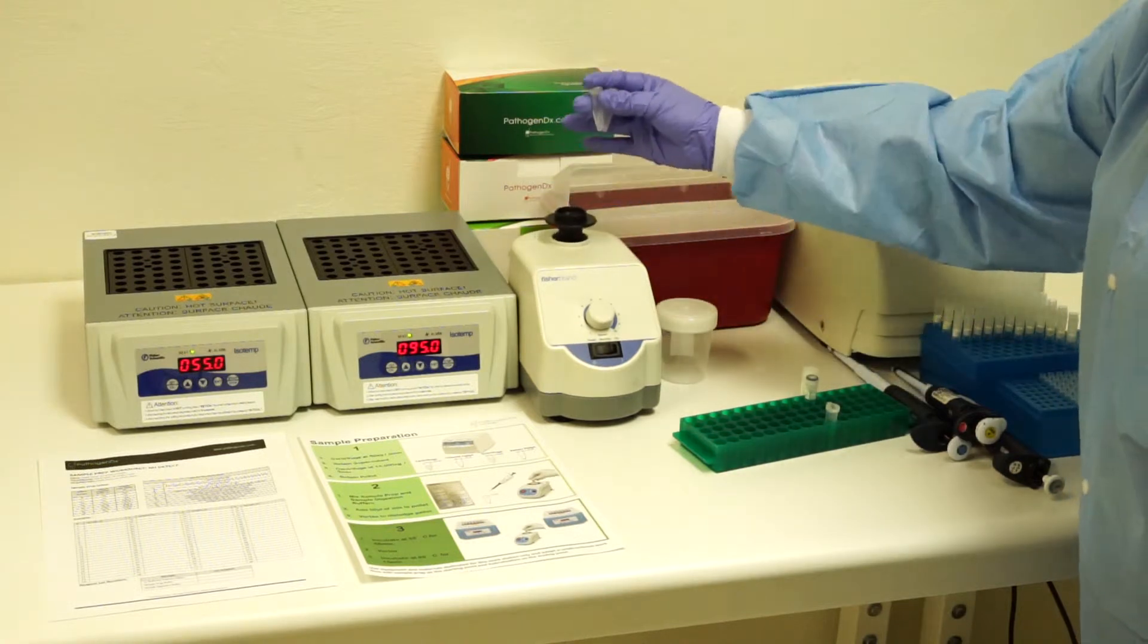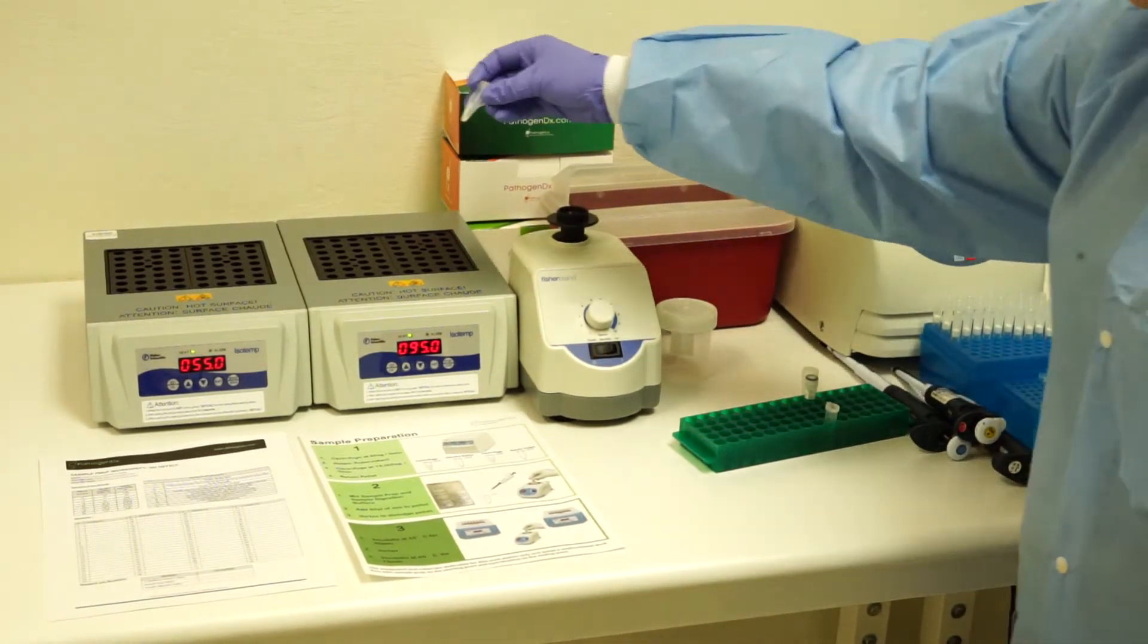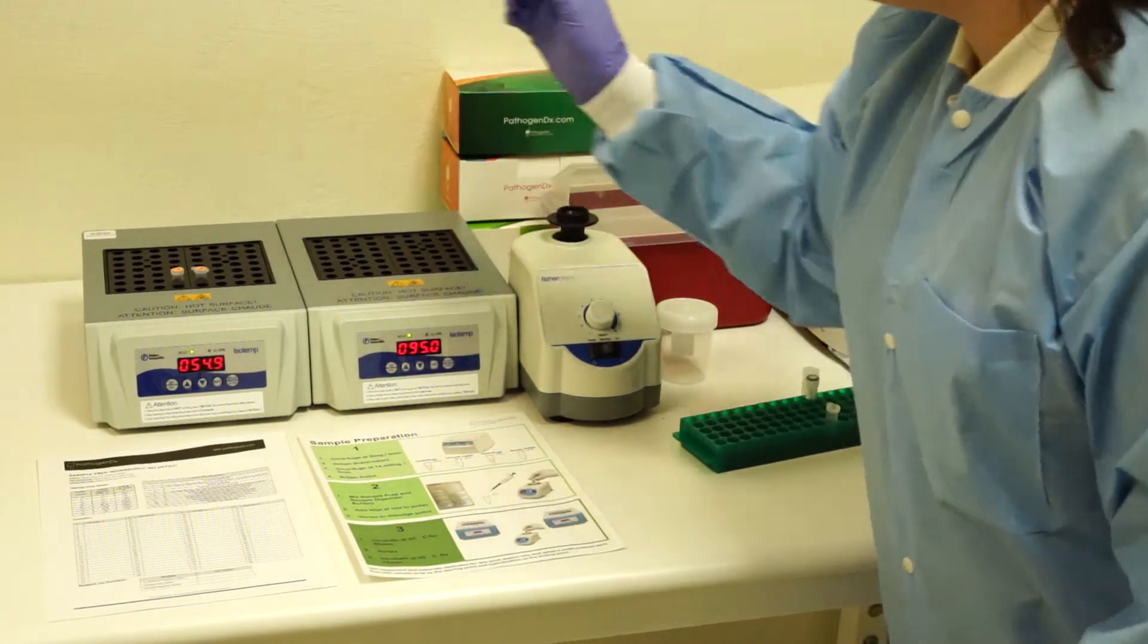Once vortexing is complete and the pellet is dislodged, place the samples at 55 degrees for 45 minutes.